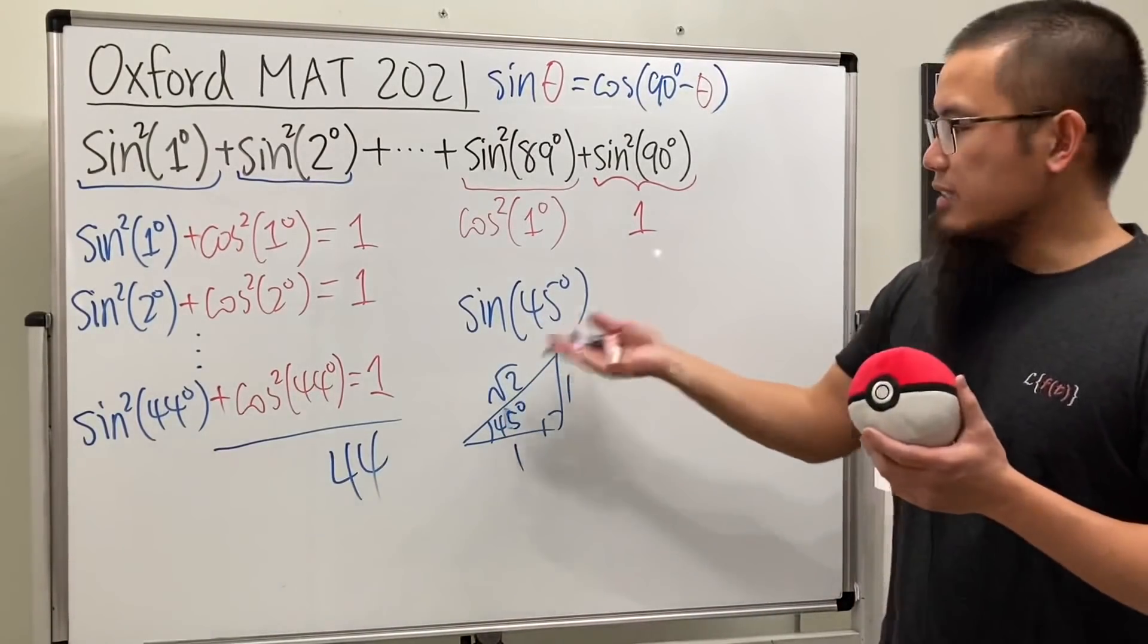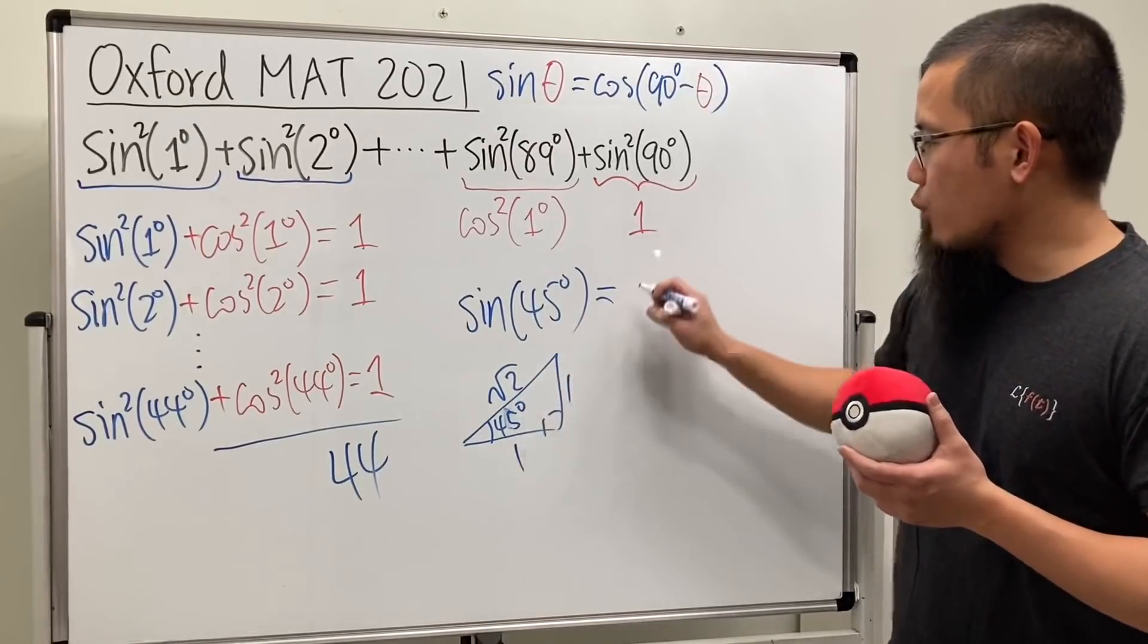Sine of 45 degrees, if you take a look at a special right triangle, 45 degrees here, we will get 1, 1, square root of 2. So sine squared of 45 is 1 over square root of 2, but we are talking about the square, so we will have to square this, so all together this is going to give us one half. So in fact we are going to add 44 and then a one half and also this one.